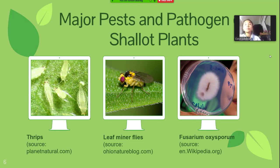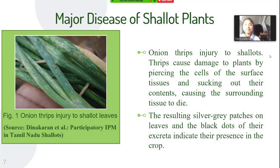We will discuss plant injury caused by the following pests and pathogens. The first one is onion thrips injury to shallots. Thrips cause damage to plants by piercing the cells of the surface tissues and sucking out their contents, causing the surrounding tissue to die.